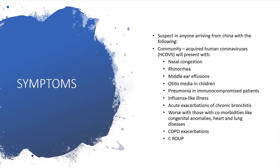What are the possible symptoms? When you suspect anyone arriving from China with the following, consult a doctor quickly. Community-acquired human coronavirus will present with nasal congestion — flu-like symptoms — runny nose, middle-ear effusion, and otitis media, particularly in children. Pneumonia is possible if the individual is immunocompromised, such as someone on transplant medicines, with diabetes, HIV, on chemotherapy, or on steroids for a long period of time.